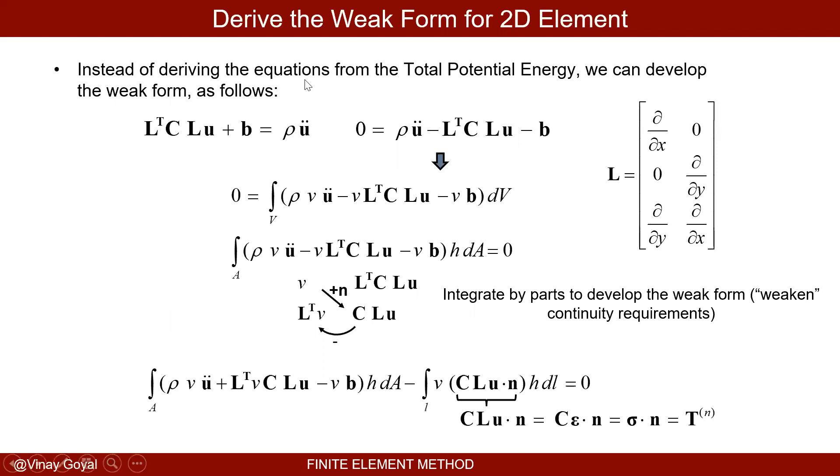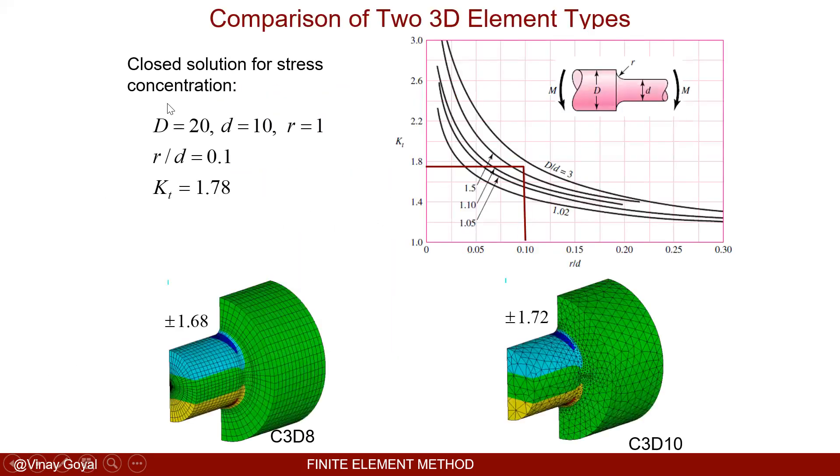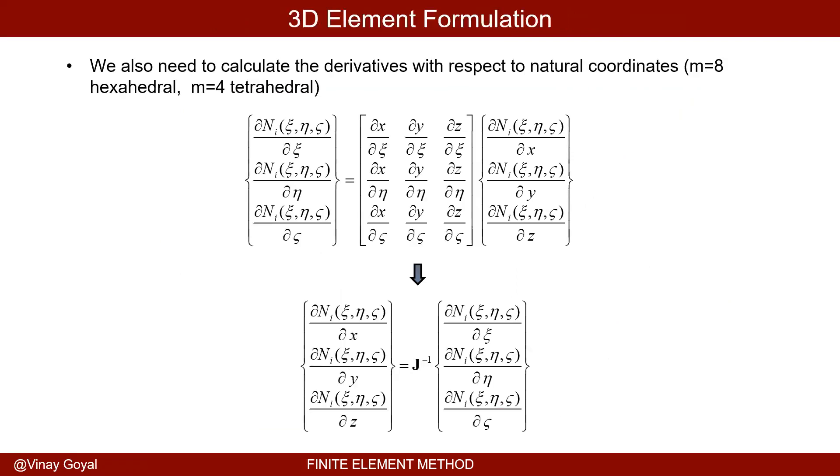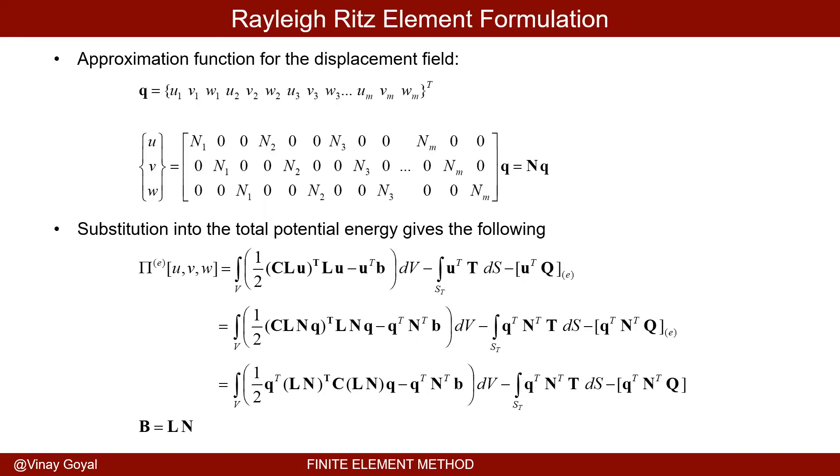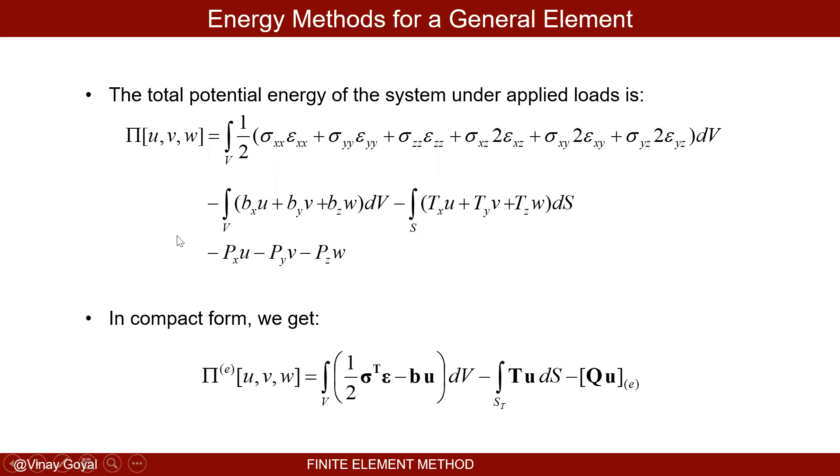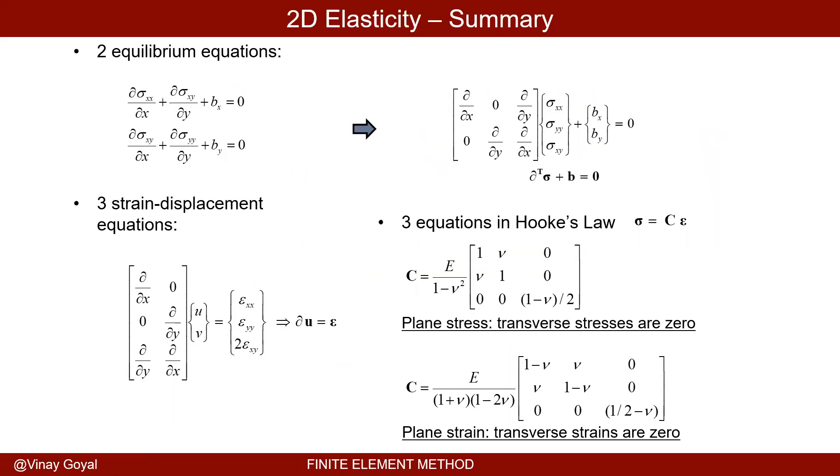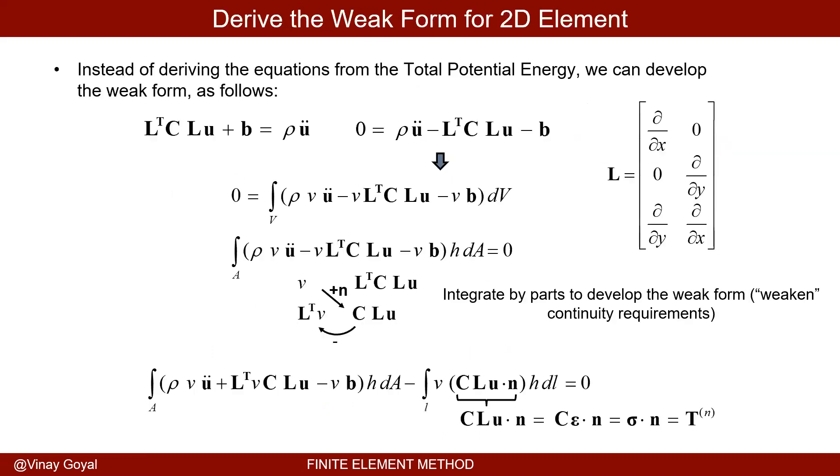Instead of deriving equations from the total potential energy we can derive it using the weak form. So earlier when I did the 3D formulation that was in a previous lecture. In the 3D formulation I used the total potential energy. But to illustrate they can actually basically derive the equations using the weak form Galerkin. I think we should try that.